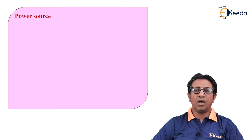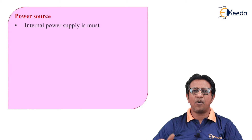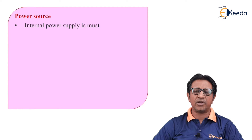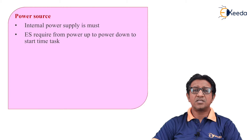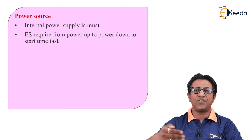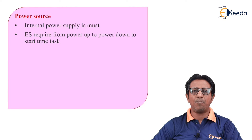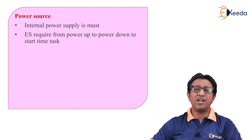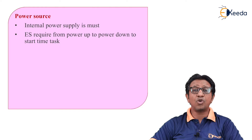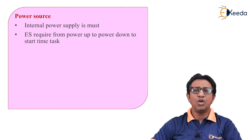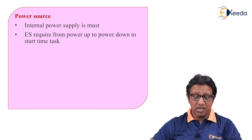The next is power source. Power can be supplied to an embedded system internally or externally. Internal power is supplied in the form of a battery, while external power can be given through adapters. The embedded system requires power from the time it starts functioning until it stops. Since an embedded system comprises many sub-parts, every part needs some power. However, not all parts are functioning at any given moment, so those parts can be disabled to save power.